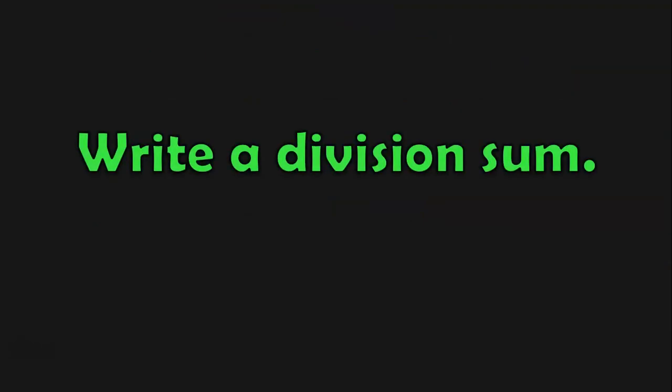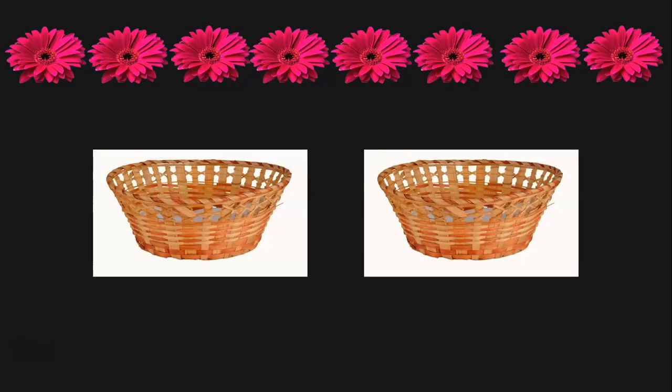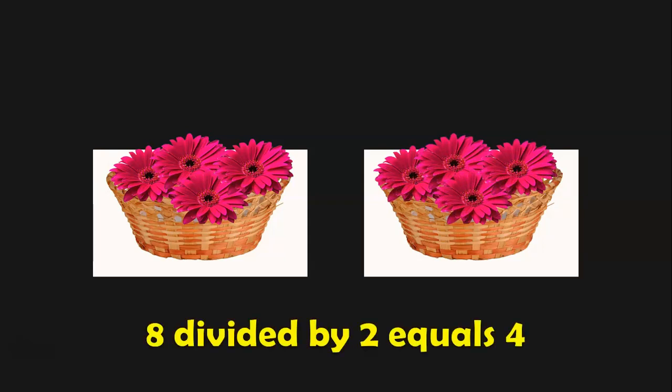Next we are going to write a division sum. Here we have 8 flowers and 2 baskets. I am going to place 4 flowers in this basket and another 4 flowers in the other basket. What is the division statement? 8 divided by 2 equals 4. So 8 flowers, when equally split among 2 baskets, you get 4 flowers in each basket. The division statement is 8 divided by 2 equals 4.